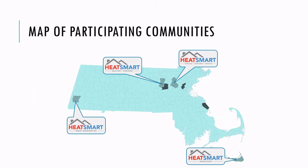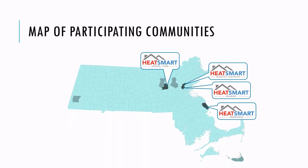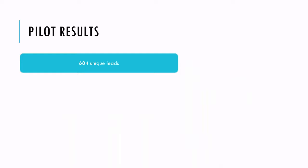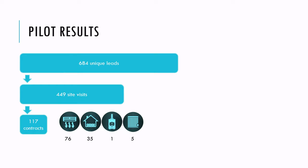The communities that participated in our pilot were across the state — from one in the far western part to a couple more eastern, and Nantucket Island with some unique circumstances. In the current second round, the communities that applied happened to be more clustered in the greater metro Boston area. From our pilot, across four communities, we had 684 people sign up showing interest, which translated into 449 site visits from installers and 117 contracts so far. Air source was definitely our most popular technology, with a strong showing from ground source heat pump as well.